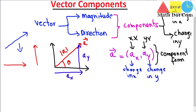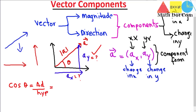From here we have to develop the formulas so that we can use them to find the vector components whenever we are given a vector and asked to find them. For that purpose, we will make use of trigonometric ratios. We use trigonometric ratios because we have a right triangle here, and we are going to find Ax and Ay. Cos theta equals the adjacent side divided by the hypotenuse, where the adjacent side is Ax and the hypotenuse is the magnitude of the vector.